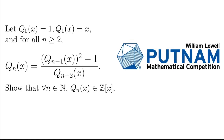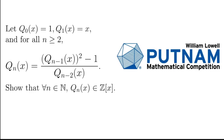Let's take a look at this problem, taken from the Partner Mathematical Competition 2017. It says: let q_0(x) equal to 1, q_1(x) equal to x, and for all integers n that are at least 2, q_n(x) equals q_{n-1}(x) squared minus 1, all divided by q_{n-2}(x). Given this recurrence relation, show that for all natural numbers n, q_n(x) is a polynomial with integral coefficients.